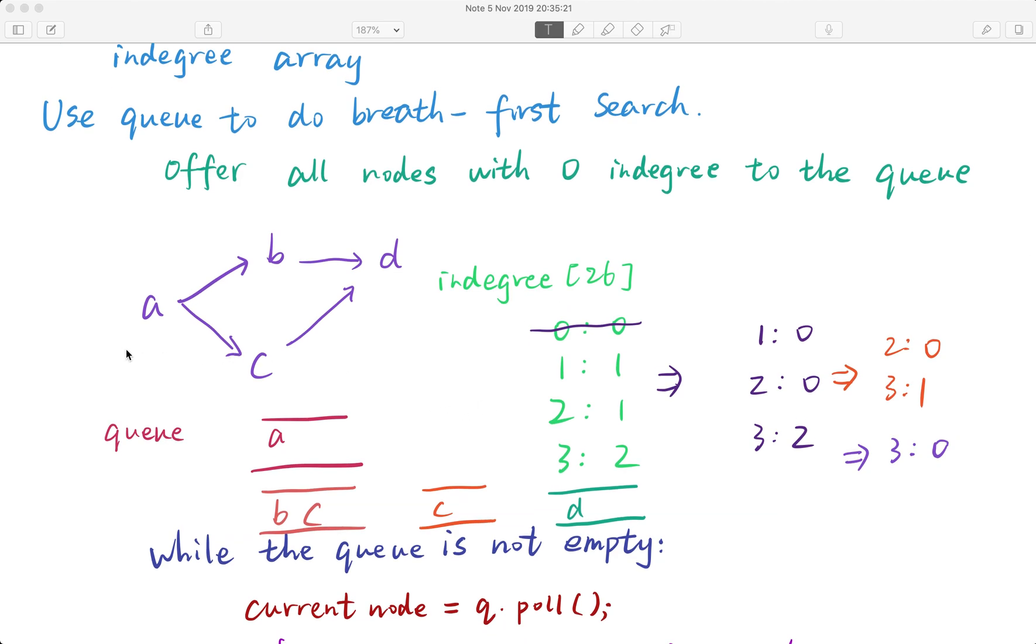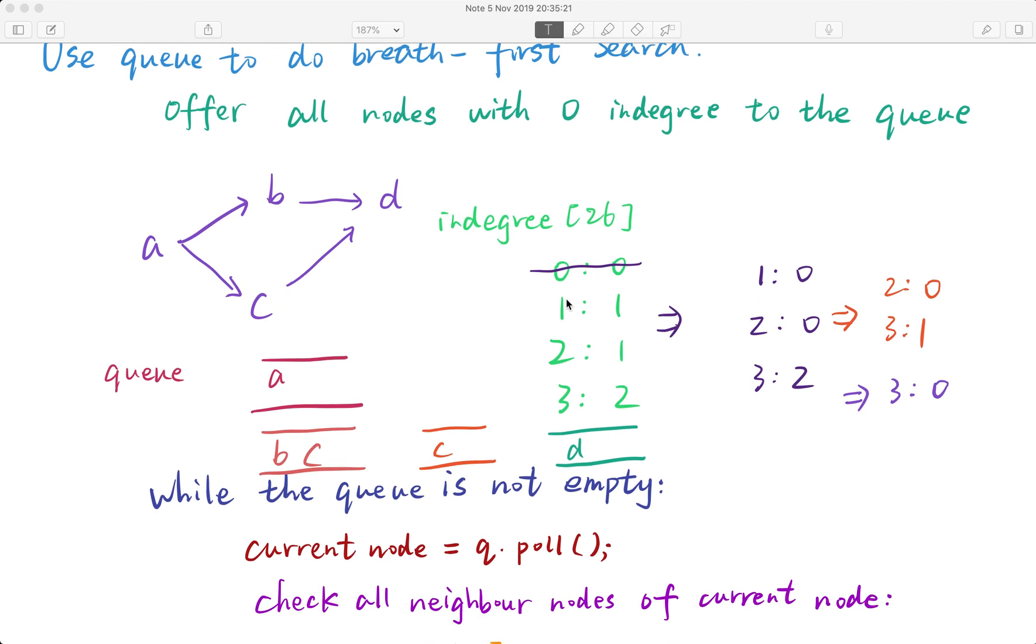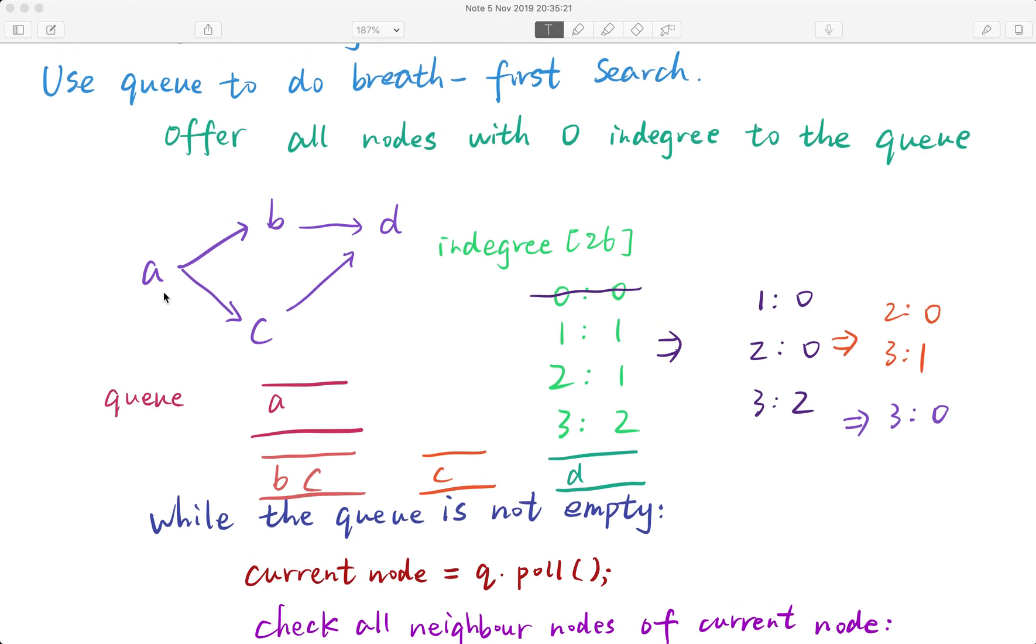Because a does not have any in-degree, we can perform it first if it represents tasks. So we can pick a first, and next we try to pick another node. This is the in-degree of this given graph. We will perform BFS, and we first offer a into the queue.